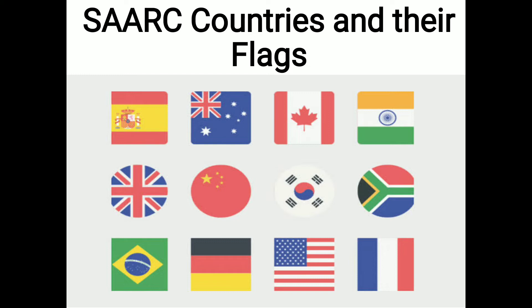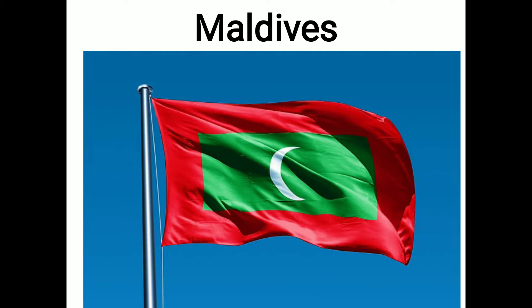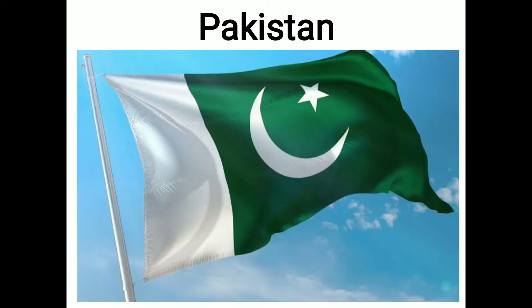In this chapter we have to do the matching part — flags with their countries. The first one is the flag of Maldives. The flag of the Republic of Maldives is green with a red border. The center bears a vertical white crescent, with the closed side on the raising side of the flag. This flag was adopted on 25th July 1965.